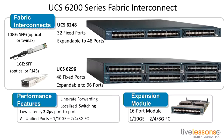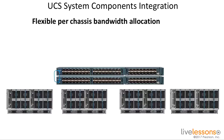The Fabric Interconnects handle all the northbound connections for my network and for my storage. When I first set up the system, I'm going to cable Fabric Interconnect A and Fabric Interconnect B together over the ports in the middle left — called the L1 and L2 ports. These ports handle the communication between the two Fabric Interconnects so they can detect when one goes down and they need to failover. L1 on Fabric Interconnect A connects to L1 on Fabric Interconnect B, and L2 on Fabric Interconnect A connects to L2 on Fabric Interconnect B.